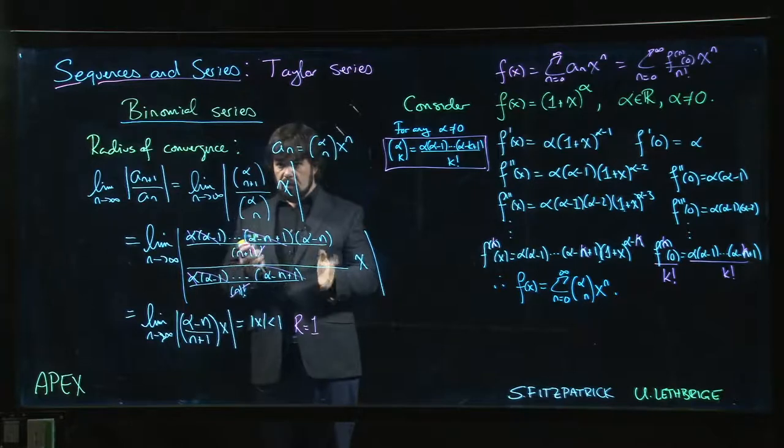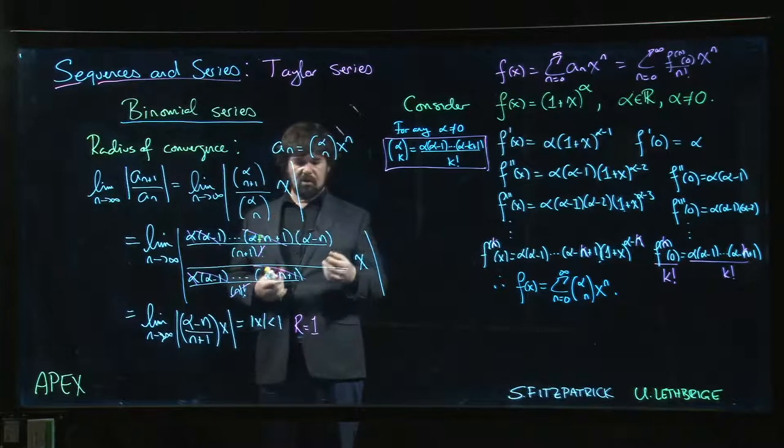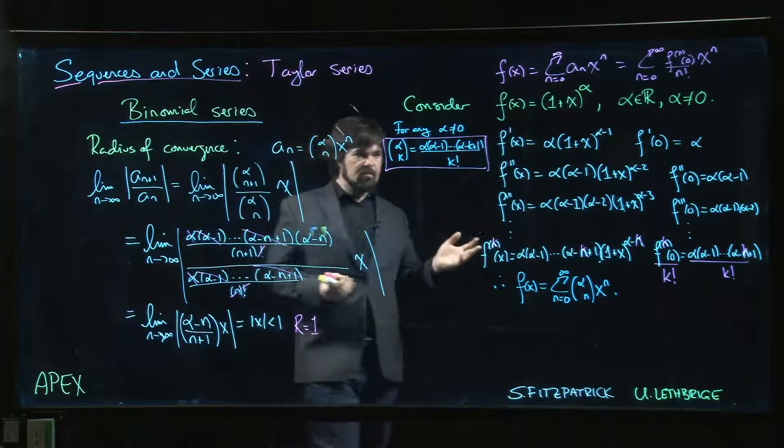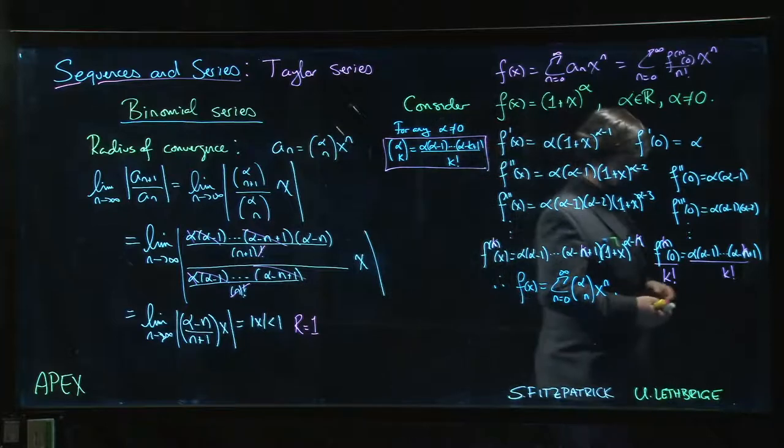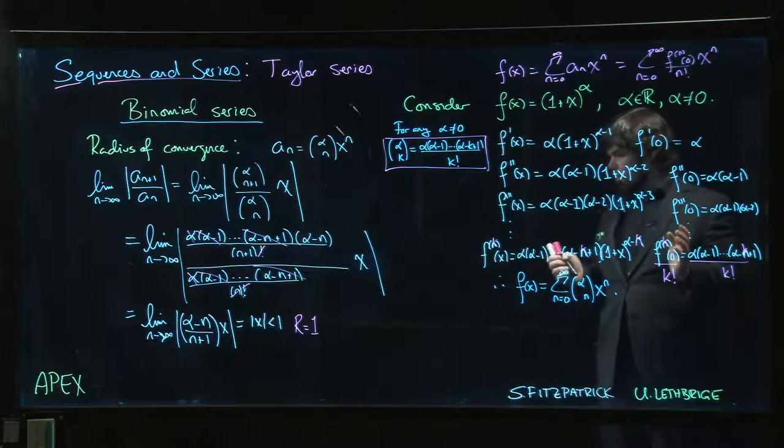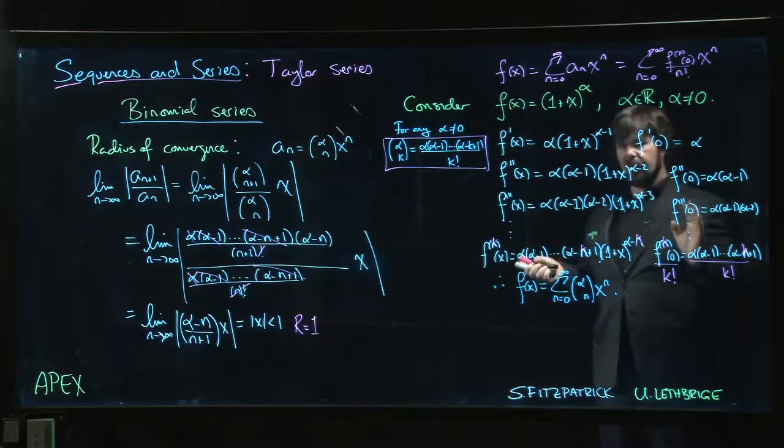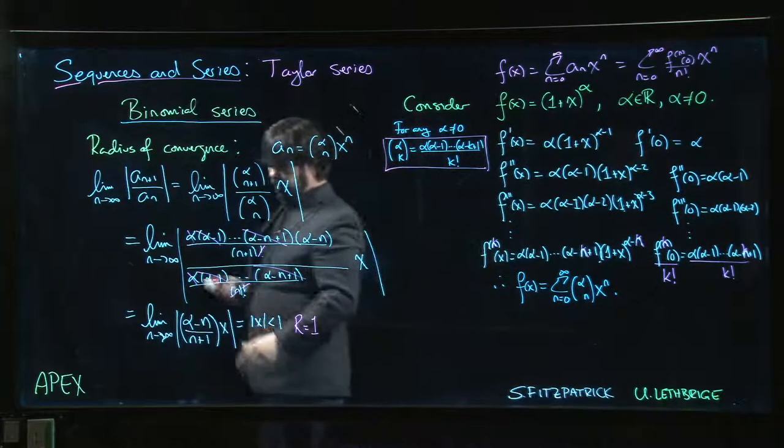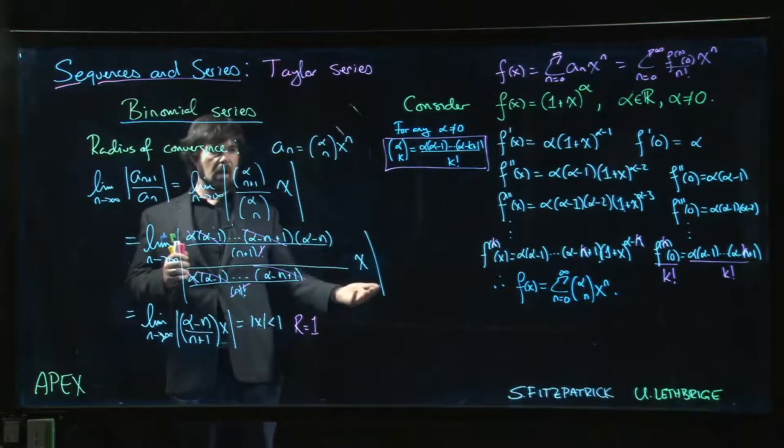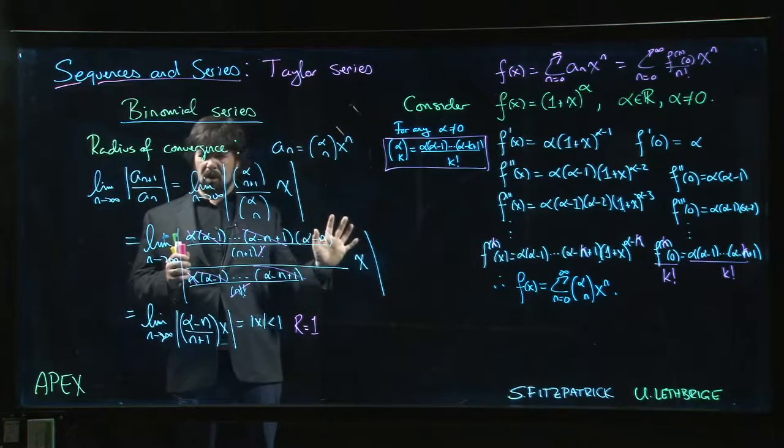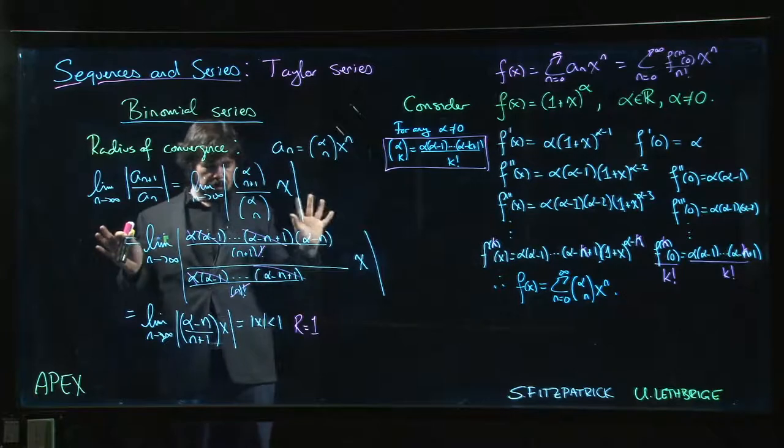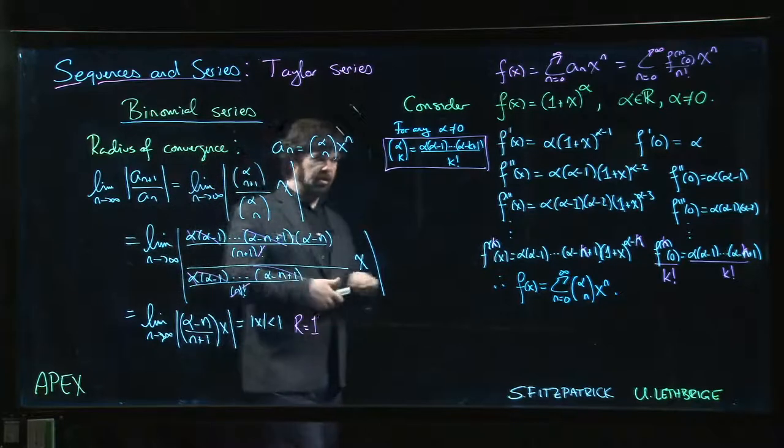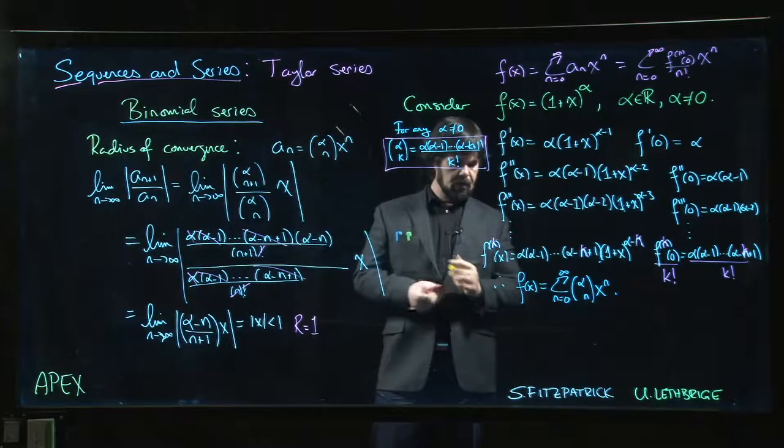The question of whether or not you can include the endpoints, it very much depends on the value of alpha that you're working with. So depending on the situation, sometimes you can include one endpoint or possibly another, but it really depends. That's beyond the scope of this course, so we'll leave that part out. Now, just to kind of finish off, what if we were going to do something like (1+x) to the 1/2?